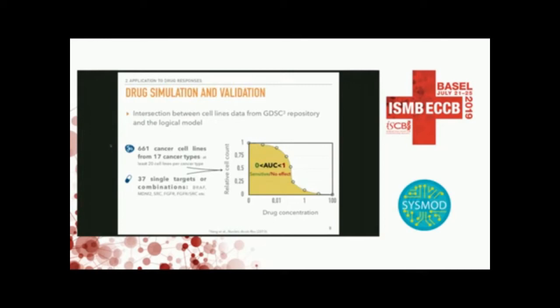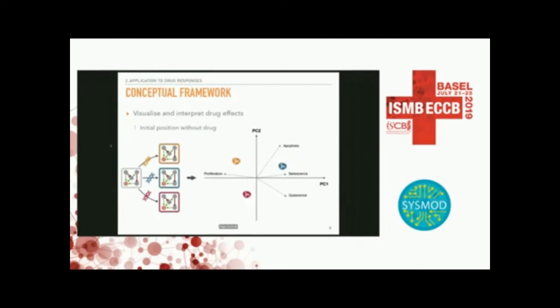Now we can play with drugs. We take data from GDSC — around 600 cancer cell lines — and focus on drugs that have a target in the model. For each pair of cell line and drug target, you have an AUC, which measures drug sensitivity: if AUC is one, you have no effect; if you get closer to zero, you have an effect. You take the generic logical model, personalize it with cell line data, and simulate. In a PCA plot you can see the asymptotic state — whether a cell line model is senescent, apoptotic, and so on — representing all four phenotypes simultaneously.